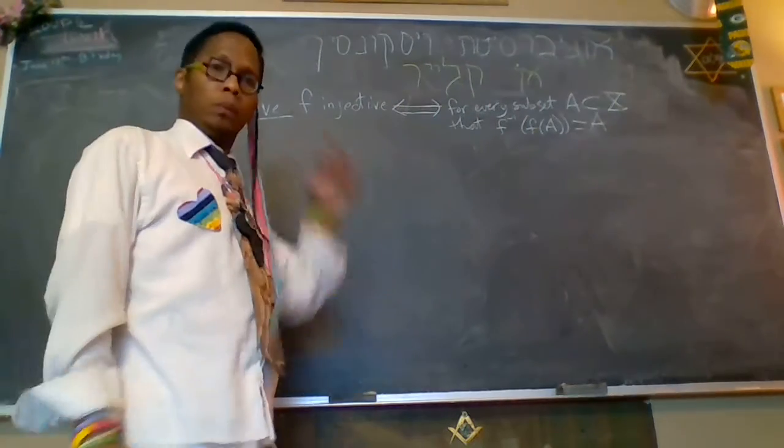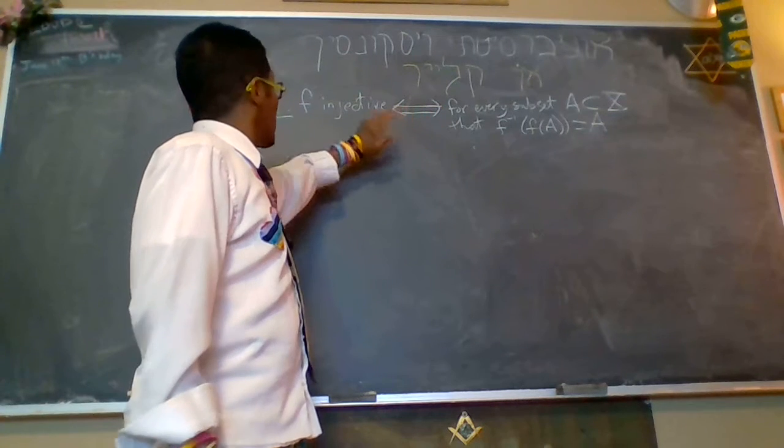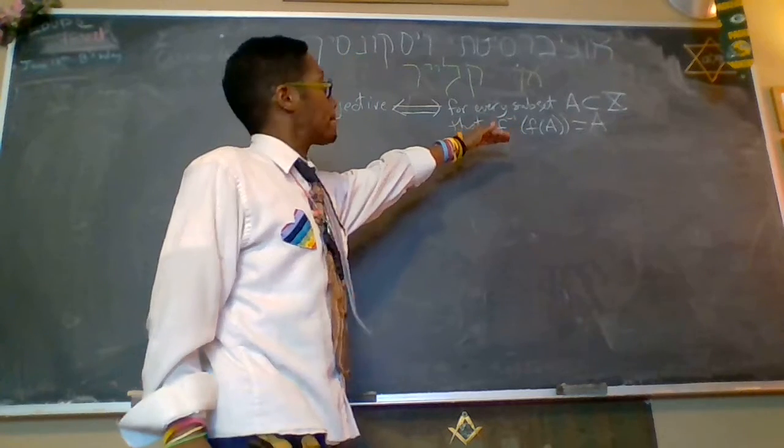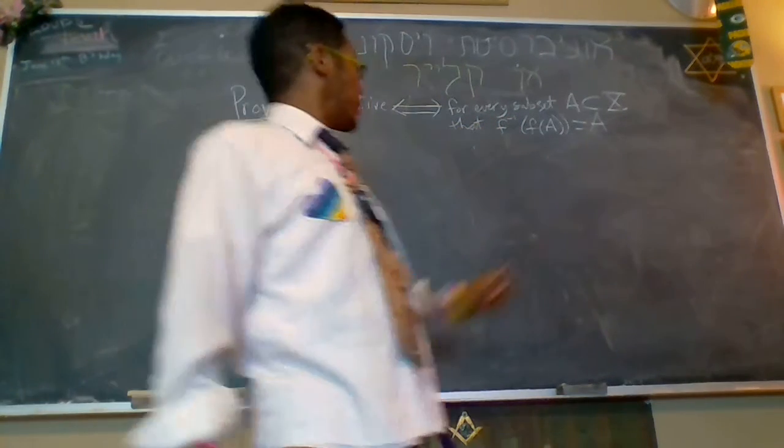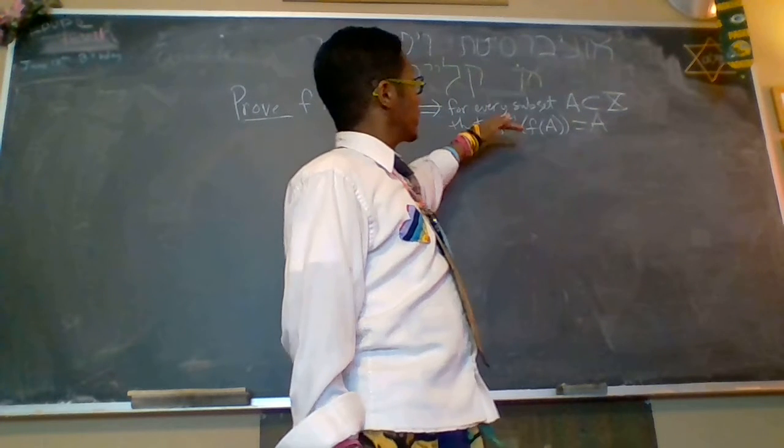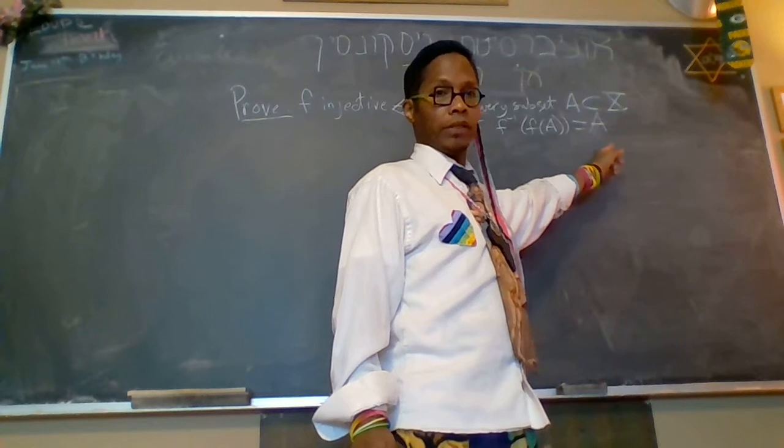So in class, I proved that if f is injective, then this holds. And the containment where f is needed to be injective is the inverse image of the image of a contained in a. That required f to be injective.